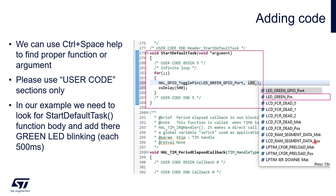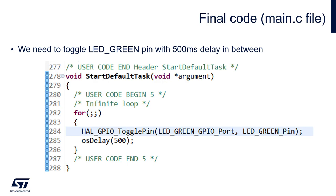The second argument is LED_green_Pin. LED_green is our label set for the PA5 pin during peripheral configuration. The assignment of labels to pins is done within the main.h file. This is our final code. The result should be the green LED toggling each half a second. Now we can build the code and start a debug session.